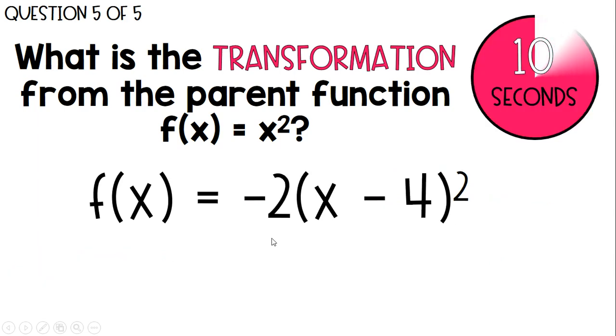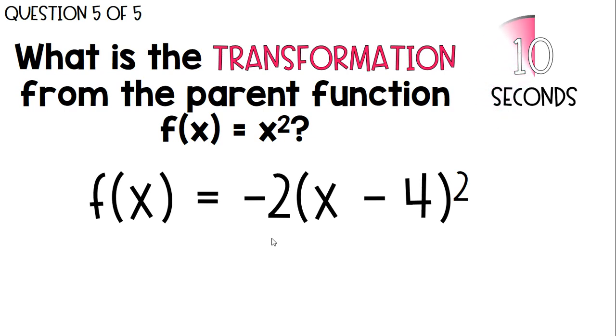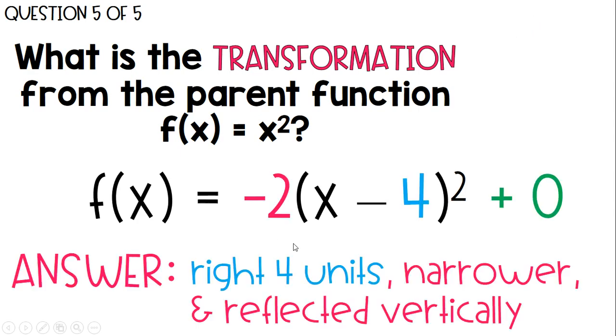Last one. What is the transformation from the parent function? It simply means it's shifted 4 units to the right, and it's narrower, and it's also reflected vertically. So when you have an a value of negative 2, it's a skinnier graph and it's reflected, and it's not shifting up or down because of that plus 0.